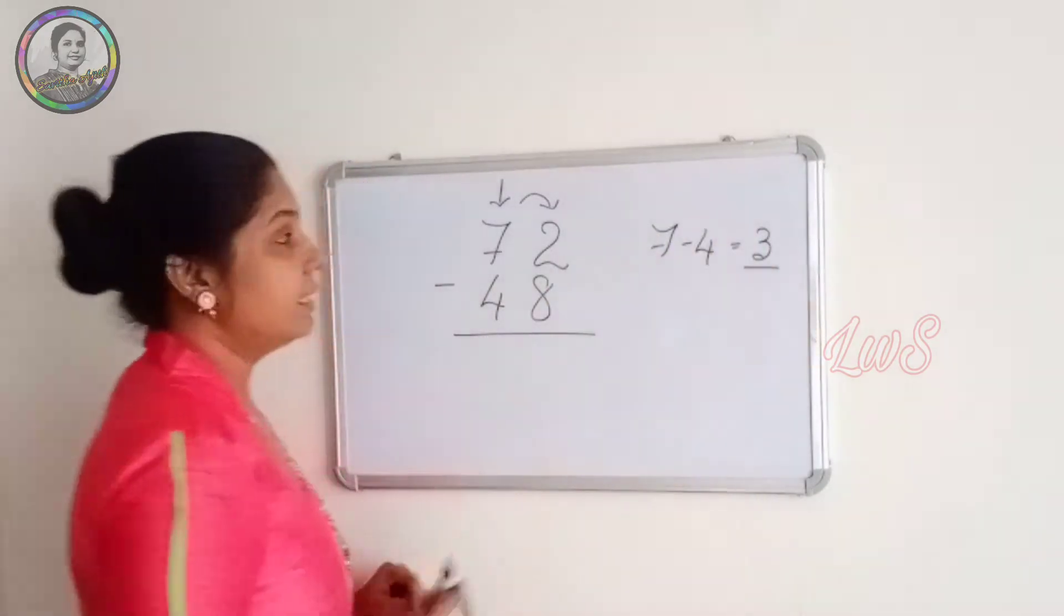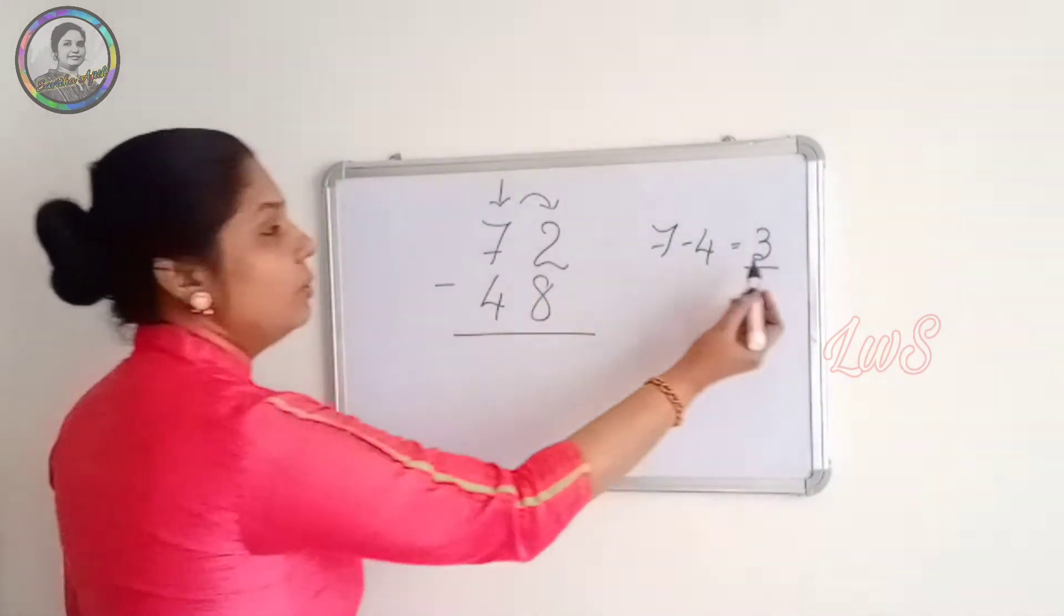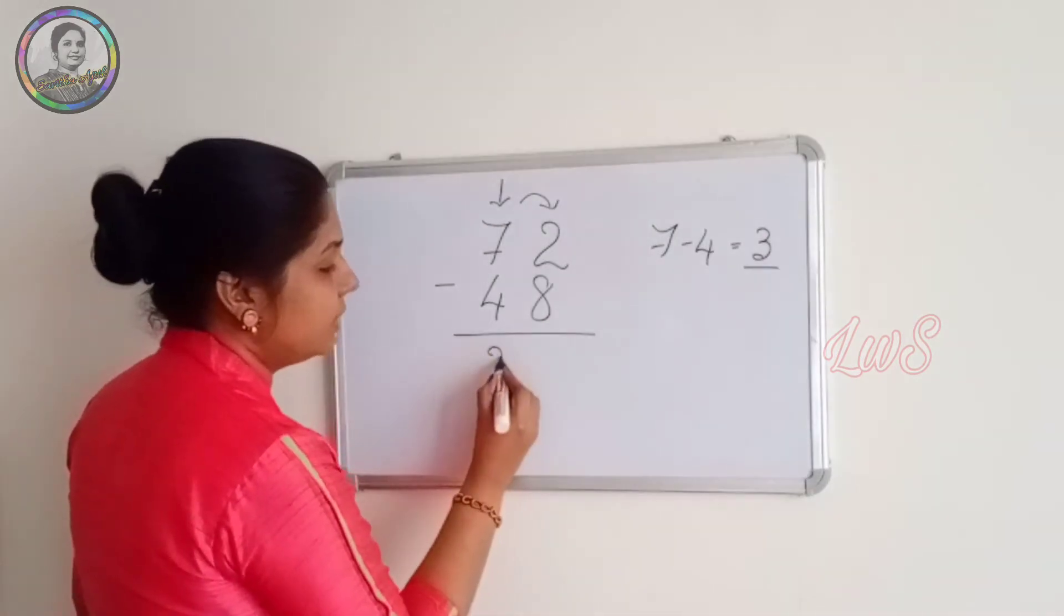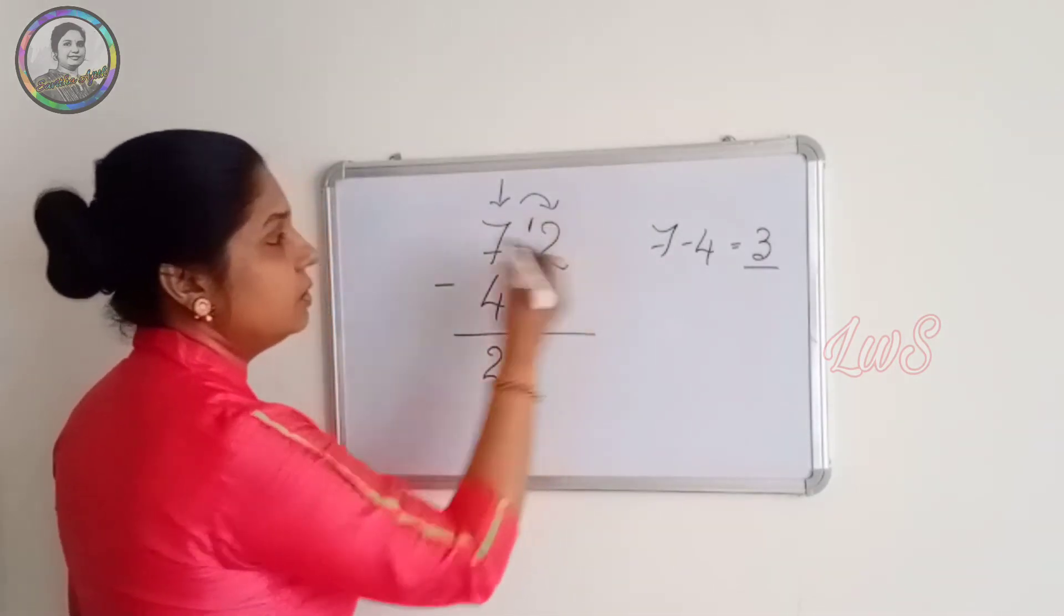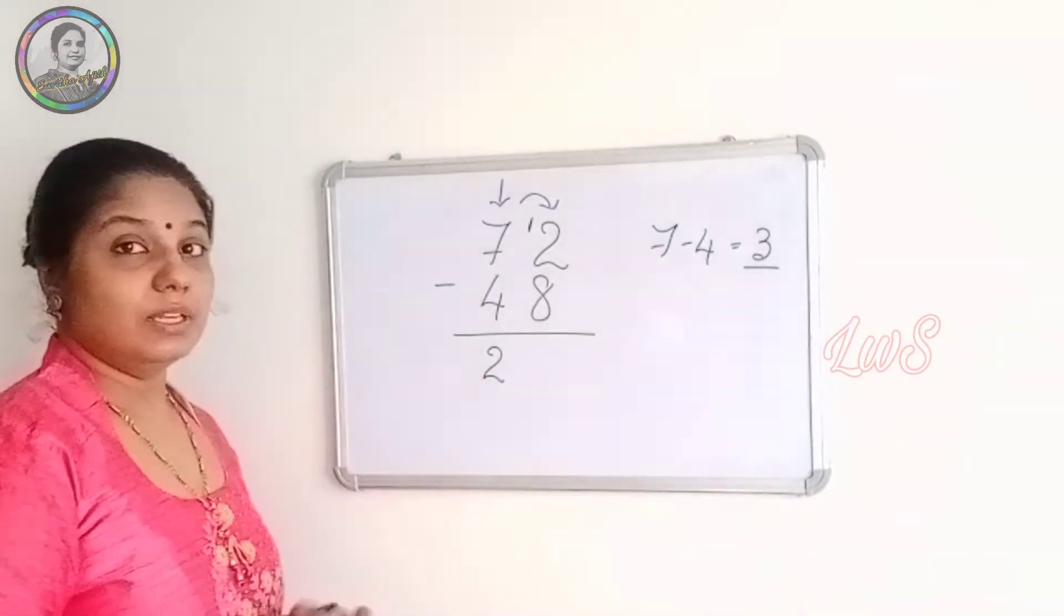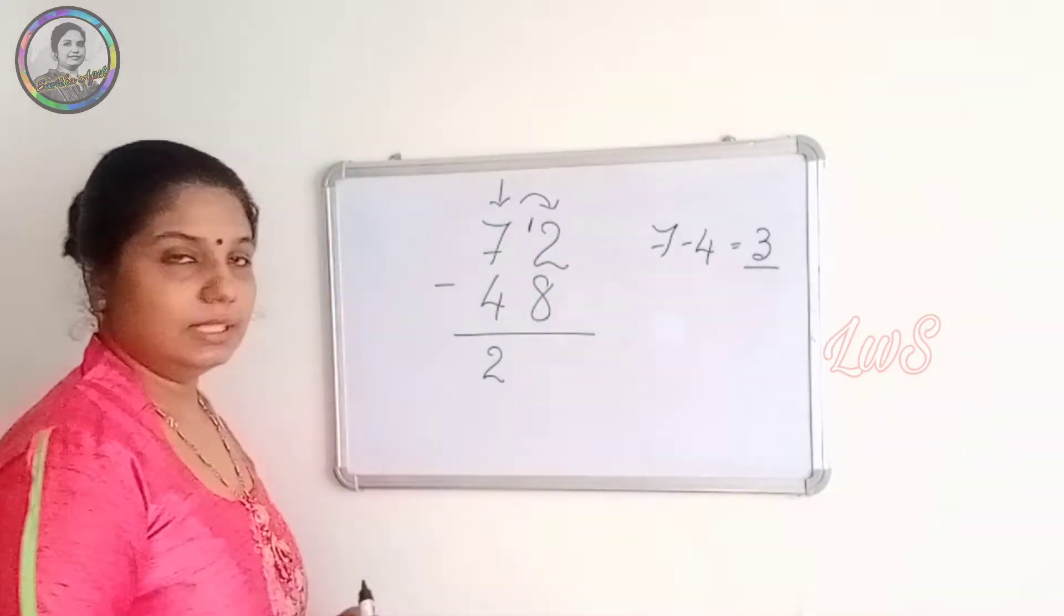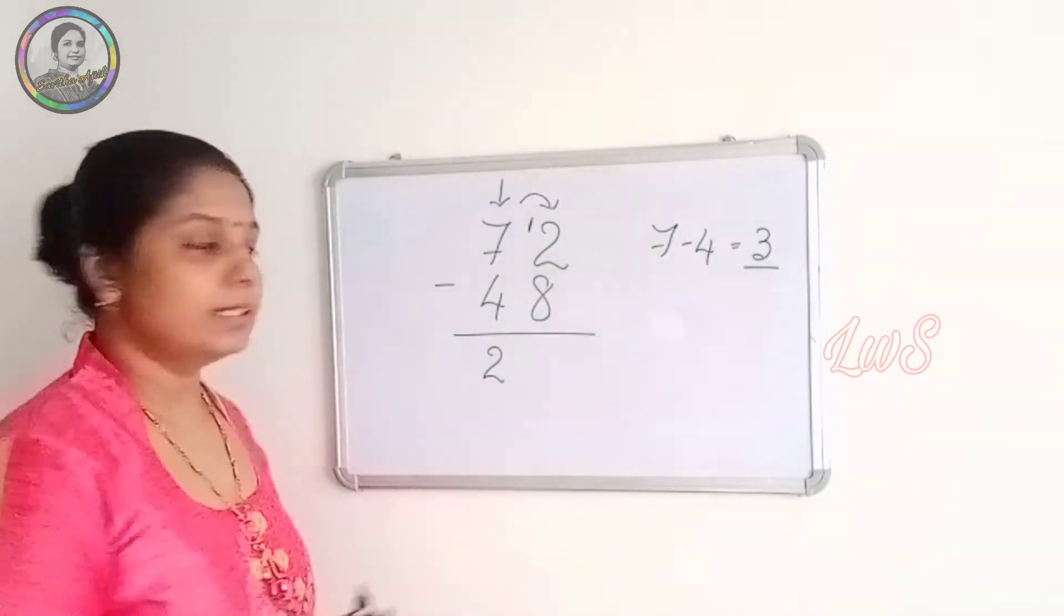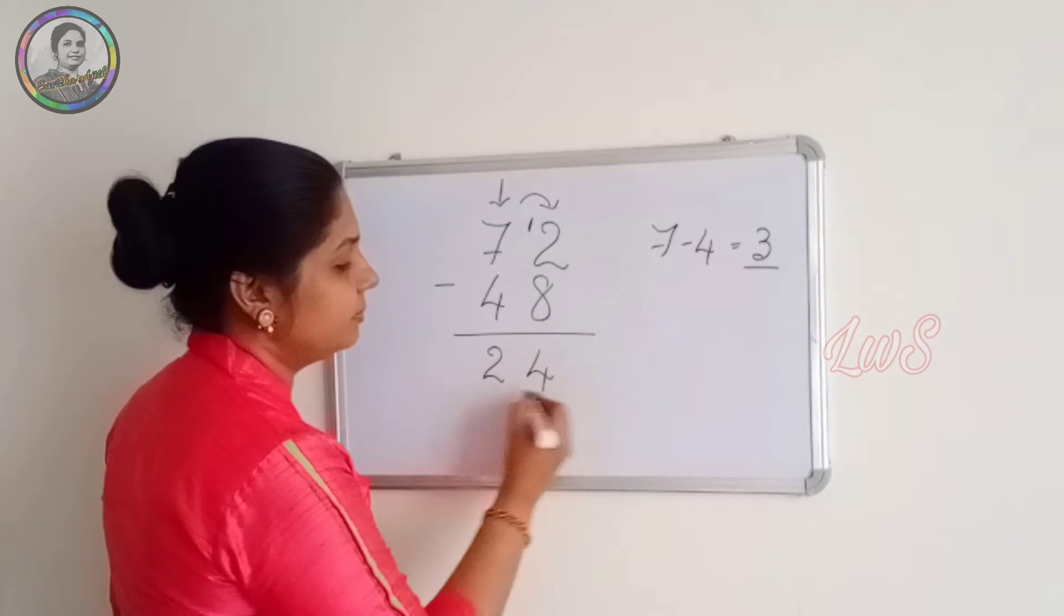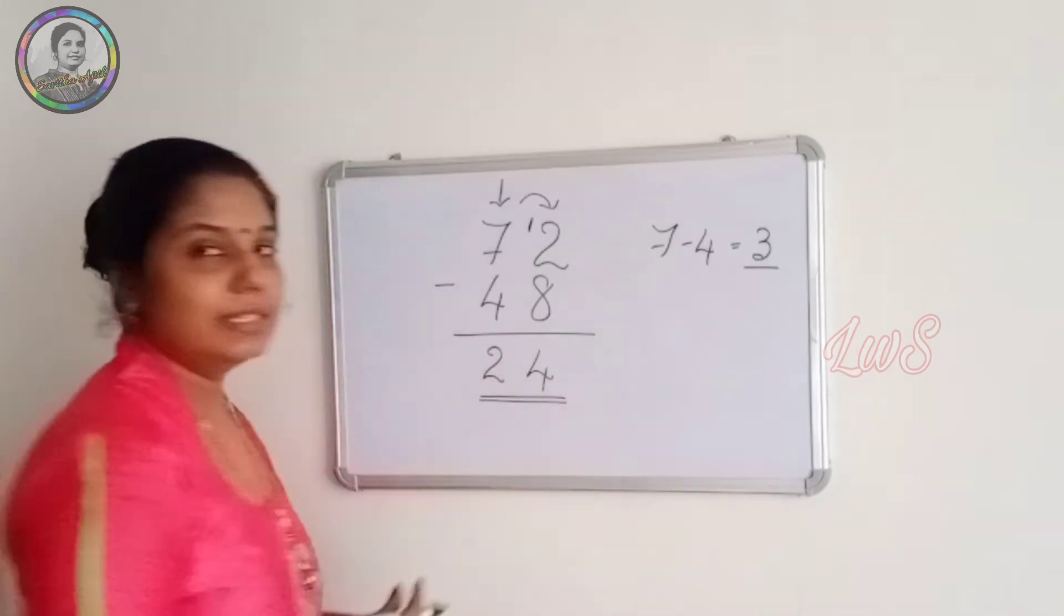from this 3, we give 1 to that 2. So we write 3 minus 1, 2 here. And give that 1 to this 2, so that this becomes 12. And this 12 minus 8, we can subtract, which is equal to 4. So the answer is 24.